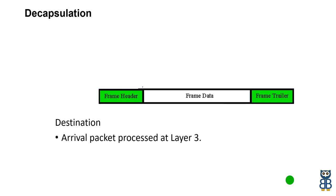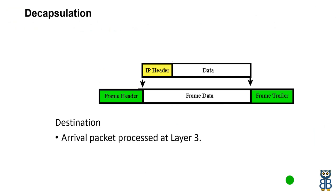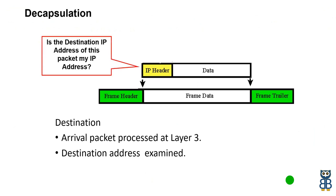Decapsulation means when the network layer receives data from the data link layer and decapsulates it to read the packet details. Post-decapsulation, the network layer takes decisions. If the destination IP address is correct and belongs to the device, the segment is passed up to the appropriate service at the transport layer. If the destination IP address does not belong to the device, it discards the packet.